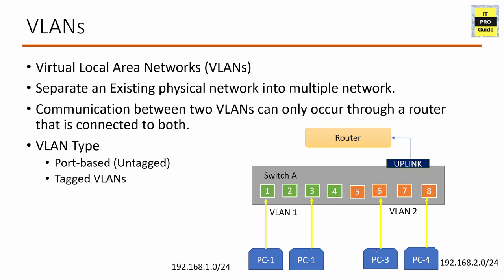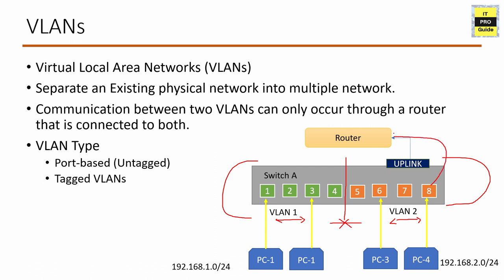Look at the picture. We have a switch with eight ports. I have two departments' PCs connected to that switch, and I don't want the PCs between these two departments to communicate over the network. So I separated the first four ports with VLAN tag 1 and the other four with VLAN tag 2. Any device connected to ports 1 to 4 can communicate together, and any device connected to ports 5 to 8 can also communicate. But if a PC connected to port 8 wants to talk to devices on ports 1, 2, 3, or 4, it needs to be routed through a router because it is in a different VLAN. This brings more security and performance as it reduces the broadcast domain.